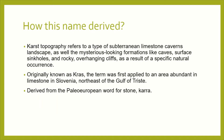But how is this name derived? Karst topography refers to subterranean limestone's mysterious-looking formations like caves, surface sinkholes, and rocky overhanging cliffs as a result of specific natural occurrences. This term was first applied to an area abundant in limestone in Slovenia. The name is derived from the Paleo-European word for stone, 'kara'.